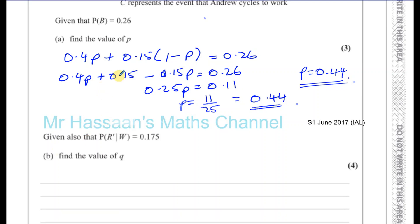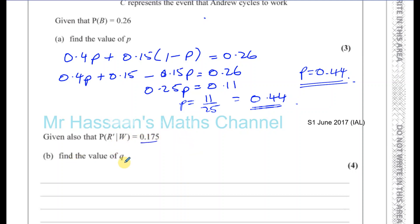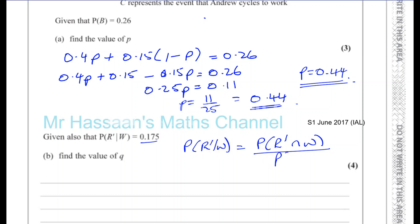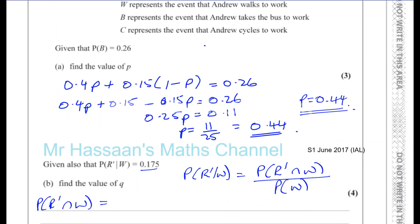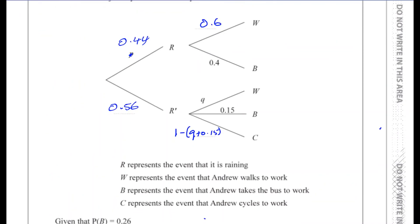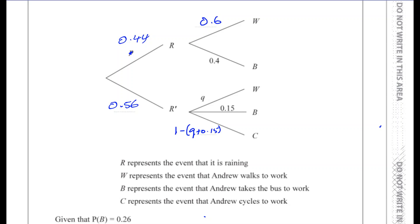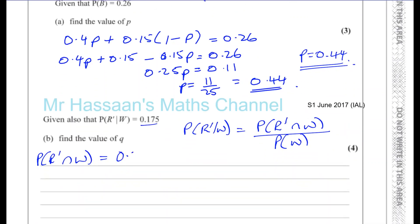Given also that the probability that it doesn't rain, given that Andrew walks to school, is 0.175 — find the value of Q. For this conditional probability, we need the intersection: the probability that it doesn't rain and he walks to school, divided by the probability that he walks to school. The probability of R' intersection W is 0.56 times Q.